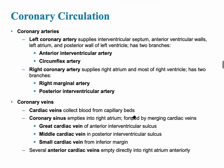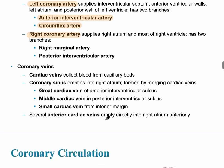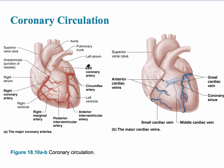The main coronary blood vessels to know are the left and right coronary arteries. The left coronary artery branches into the anterior interventricular artery, also called the left anterior descending artery — and also called the widow maker because it causes many deaths. On the side of the heart, the left coronary artery becomes the circumflex artery. So the left coronary artery leads to two branches: the anterior interventricular artery and the circumflex artery.